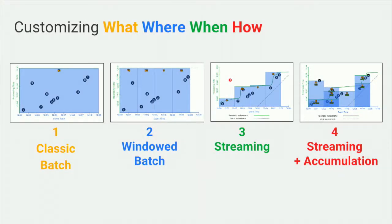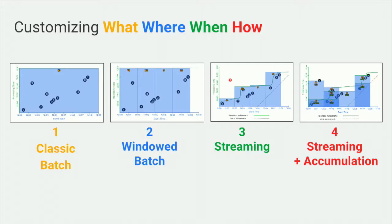To summarize this section: we took an algorithm — summing integers — and ran it in a variety of scenarios, from a simple batch case to a complex streaming system. For each scenario, we had to modify typically one line of code. That same story would hold however complicated the business logic may be — whether it's summing integers or training machine learning models, it will still be a one-line change to run in any of these scenarios. That's the power of the Beam unified model.